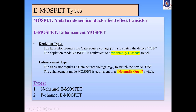In depletion MOSFET type, we have studied N-channel D-MOSFET and P-channel D-MOSFET. Now it's time to learn about the enhancement MOSFET. There are two types: N-channel E-MOSFET and P-channel E-MOSFET. The transistor requires gate-to-source voltage, denoted by VGS, to switch the device on. The enhancement mode MOSFET is equivalent to a normally open switch.